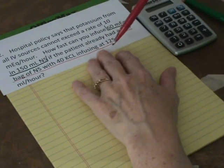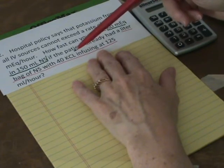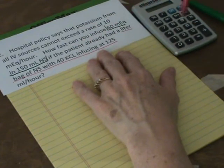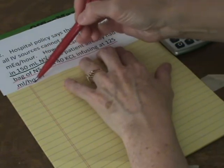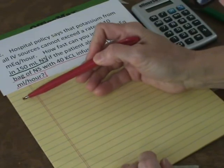When that liter bag infuses, we hang another liter bag that has 40 of K in it and set the pump to run it at 125 an hour. There's lots of ways to approach this.